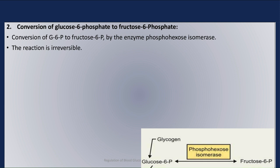Step 2 is the conversion of glucose-6-phosphate to fructose-6-phosphate by the enzyme phosphohexosisomerase. This step is a reversible reaction.